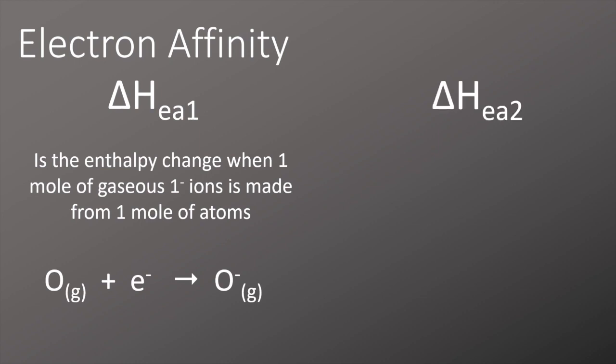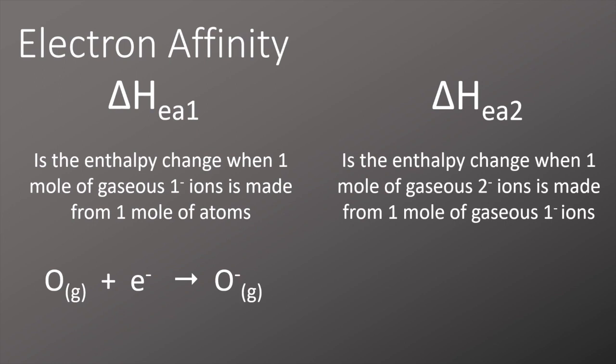The second electron affinity can be defined as the enthalpy change when one mole of gaseous two minus ions is made from one mole of gaseous one minus ions. Again using the example of oxygen ion adding an electron, we can now make an oxygen two minus ion.